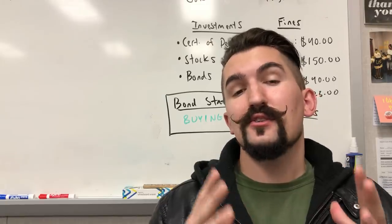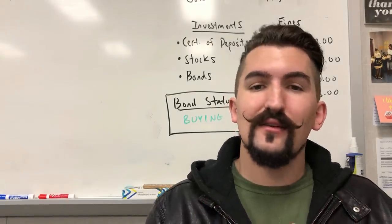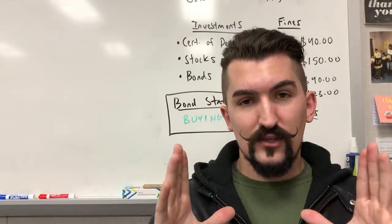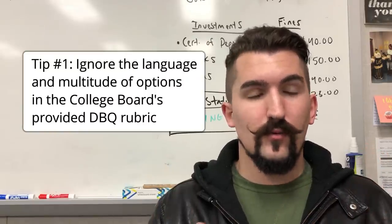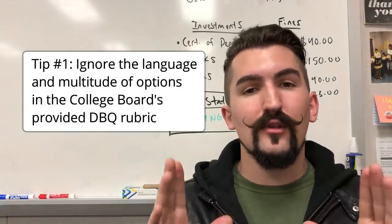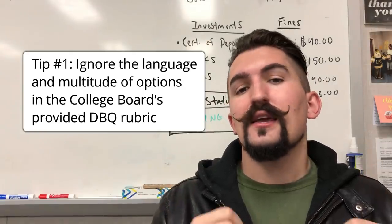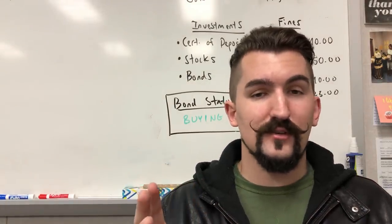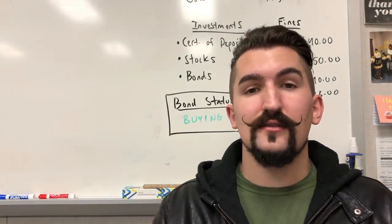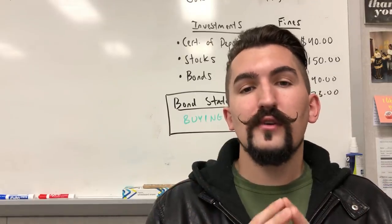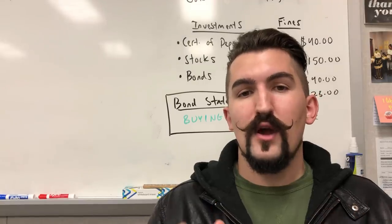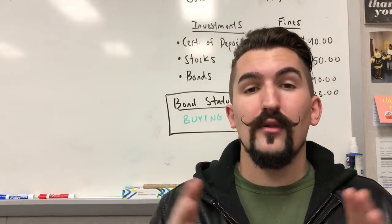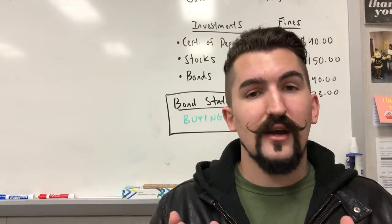Now while I will explain how to get each of the seven points for the DBQ, much like the LEQ, I'm going to give you the piece of advice that I think will help you out the most, and that is simply this: ignore the language used by the College Board, whether from their website or from your teacher. Ignore the language they use in their rubric and explanations. They give you too many options and too many difficult explanations, and it often overwhelms both students and teachers. All you need to know is how to analyze documents and write a good historical essay. This is what I've been teaching my students for years and we have done very well on those written questions.